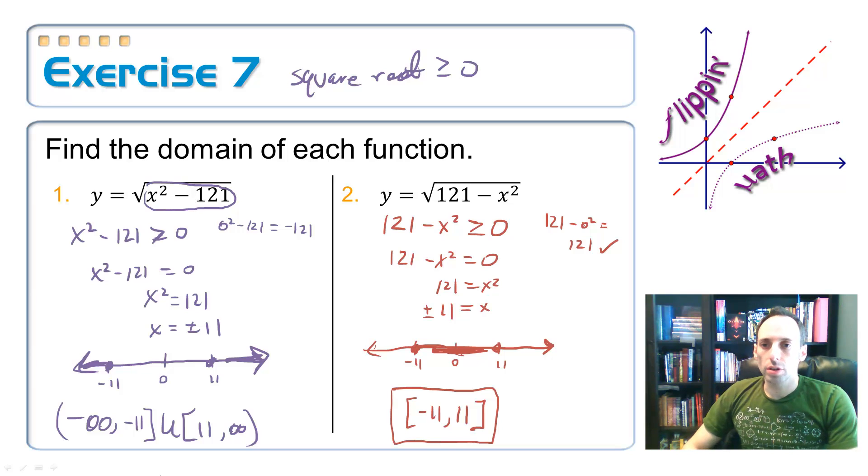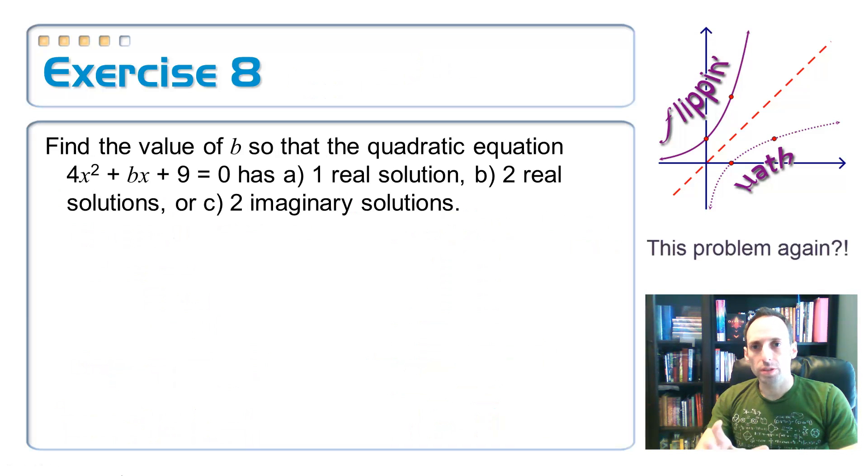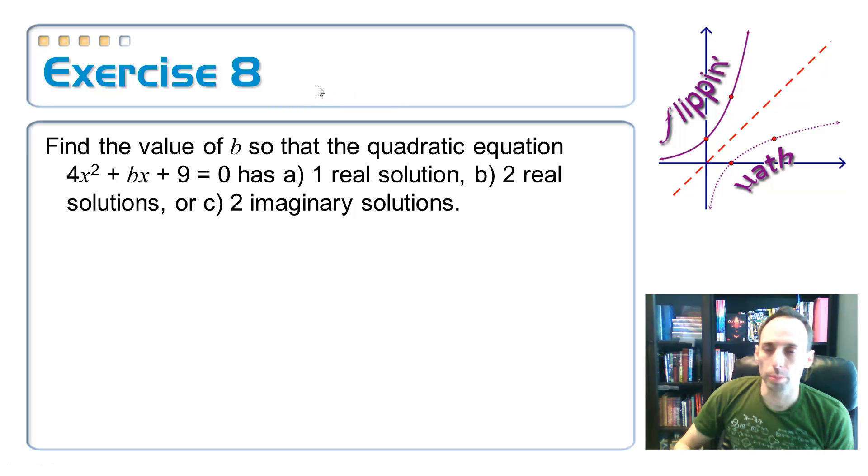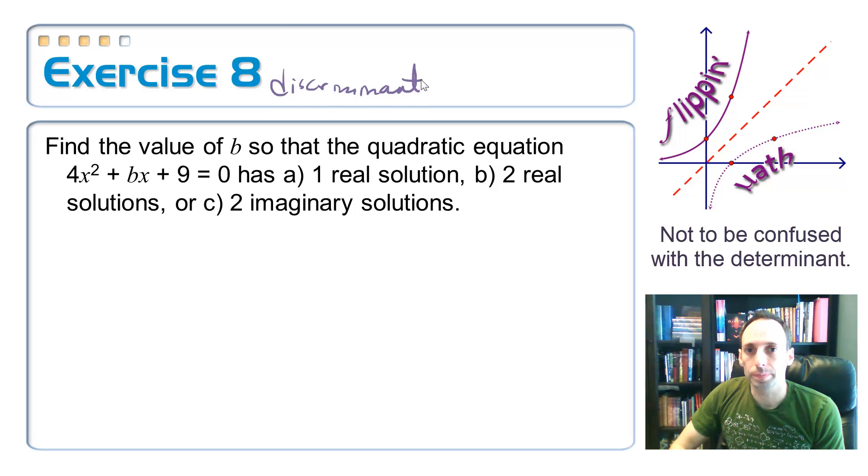Okay, so here's one more application of quadratic inequalities. We saw this before. We talked about how tough of a question it was. Now it's not quite so tough because we understand how to solve quadratic inequalities with one variable. We want to find the value of b that makes 4x squared plus bx plus 9 equal to zero. Have one solution, one real solution, two real solutions, or two imaginary solutions. And remember, this all comes from the discriminant.